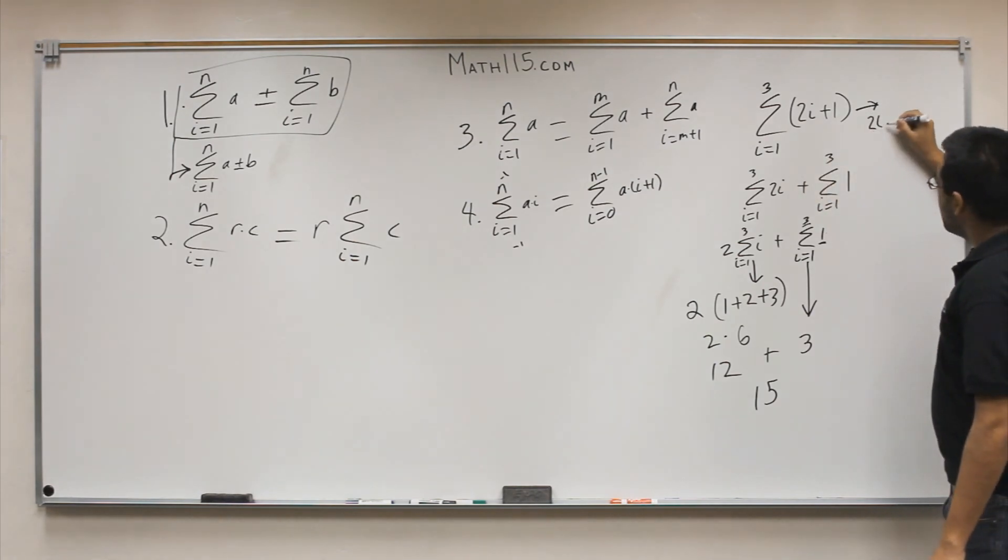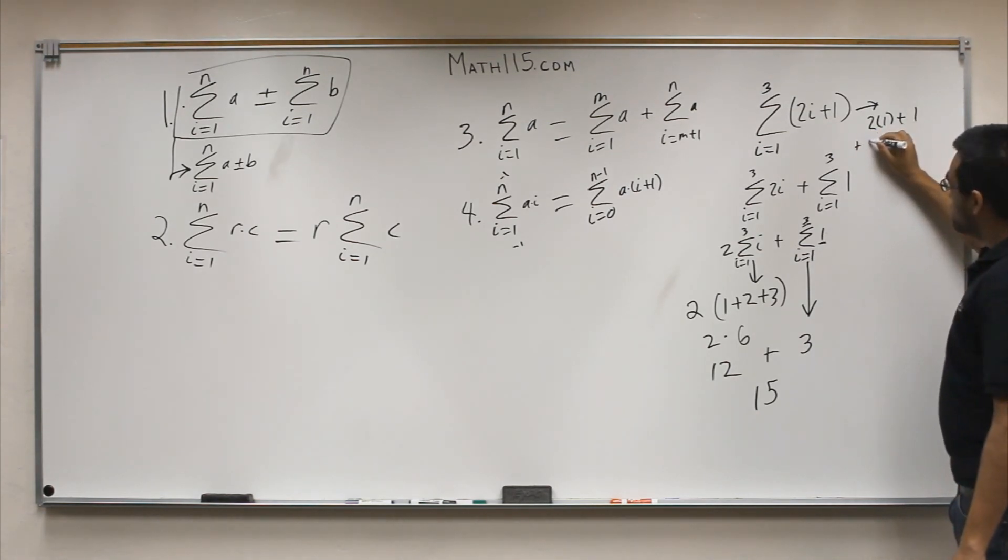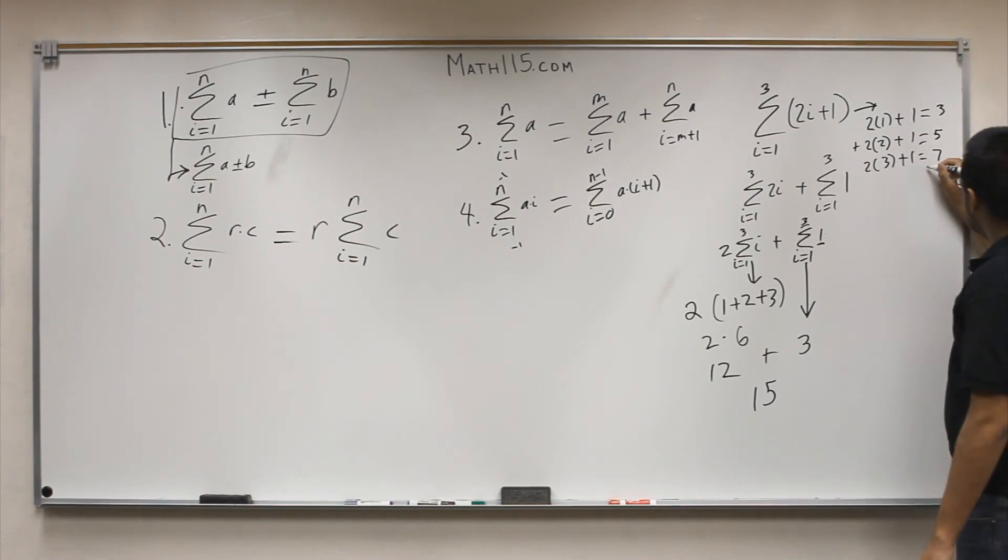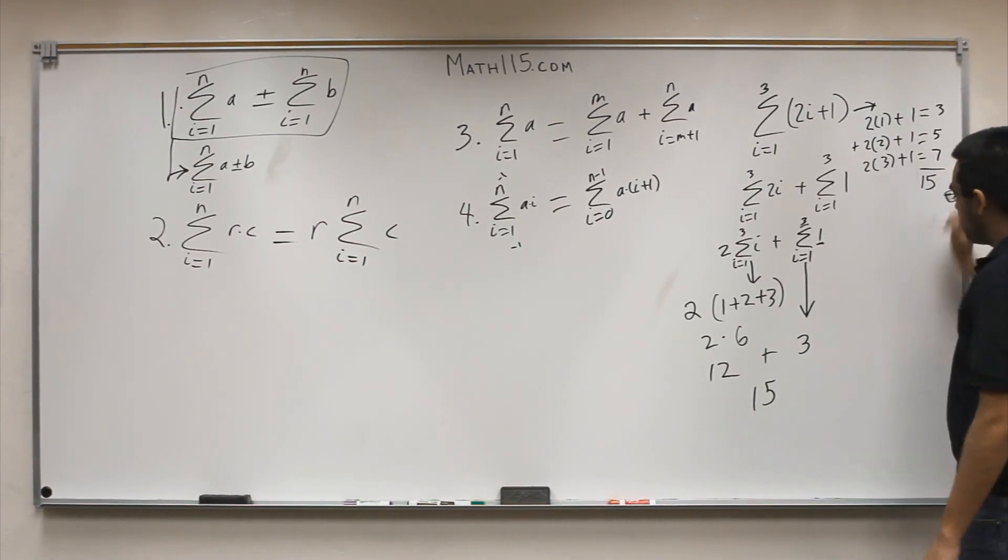You can do that as well, because that is the definition of summation notation. You do 2 times 1 plus 1, then 2 times 2 plus 1, and finally 2 times 3 plus 1. The answer to each: 2 times 1 is 2 plus 1 is 3, 2 times 2 is 4 plus 1 is 5, 2 times 3 is 6 plus 1 is 7, and we get the same answer, 15.